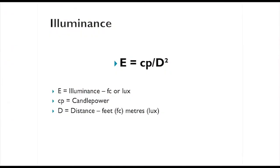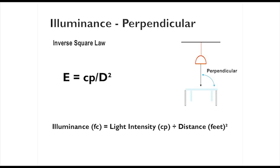E, which stands for illuminance, is equal to CP over D squared, candle power over D squared. When light hits perpendicular to this surface, in order to find out how many foot candles we have, we measure the intensity, the candle power, at this given point, and we divide it by the distance squared.